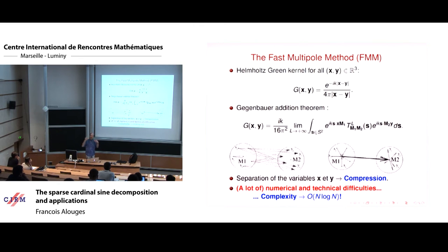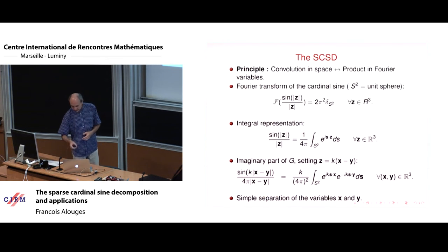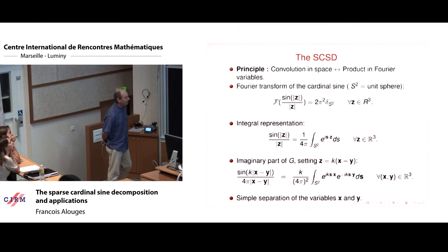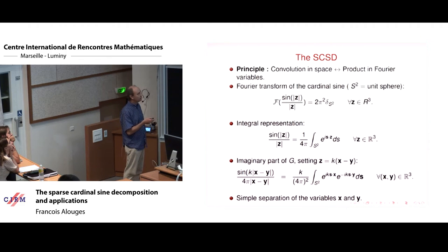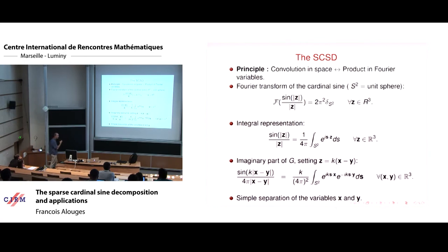Since we were working in MATLAB, implementing a hierarchical octree for the FMM with nested loops would be a disaster. So we tried something new — the CSD (Cardinal Sinc Decomposition). The principle is that all our operators are convolution operators in space. In Fourier space, convolutions become products. So instead of all the methods described above, we work in Fourier space.